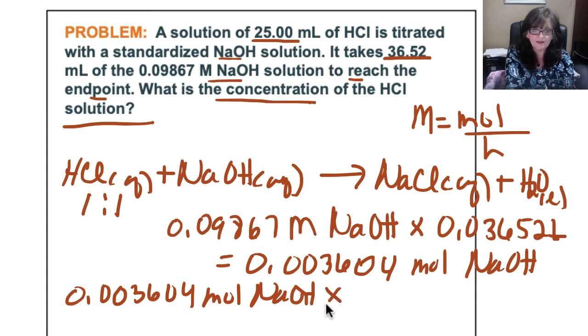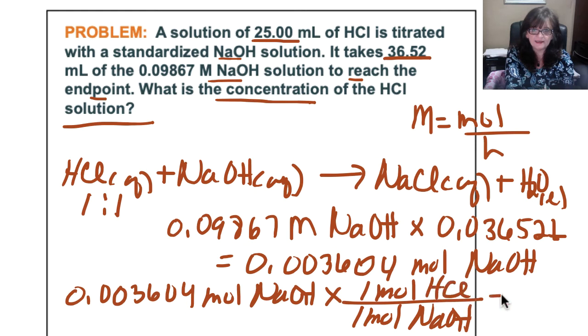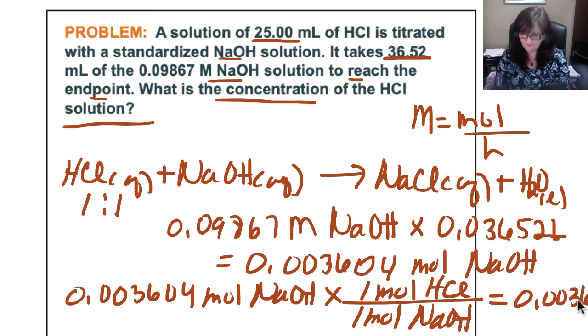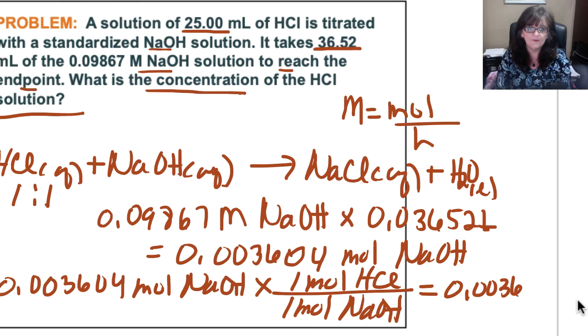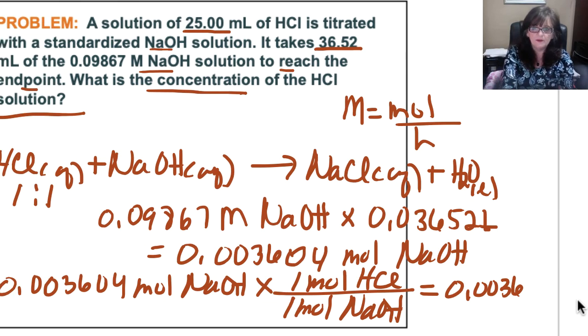So we'll take that 0.003604 moles of sodium hydroxide, and we know from our balanced equation that 1 mole of sodium hydroxide will react with 1 mole of hydrochloric acid. So that means that we have 0.003604 moles of HCl.